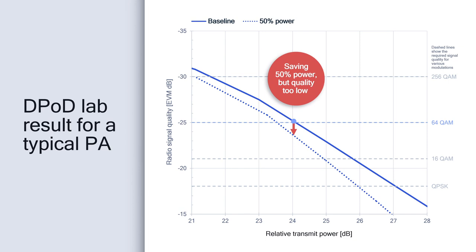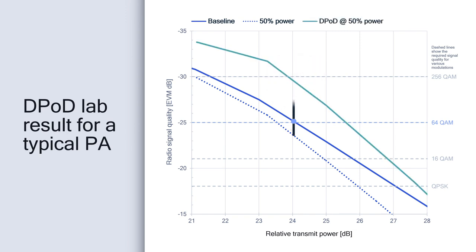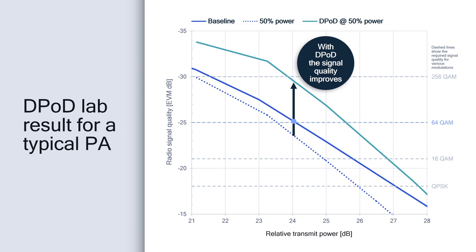As can be seen, trying to move the power amplifier to a more power-efficient operating point results in a significant loss in the signal quality, which adversely affects the communication link. With our digital post-distortion technology, we can suppress the non-linear distortions created by the power amplifier and allow it to operate in its more power-efficient operating point.